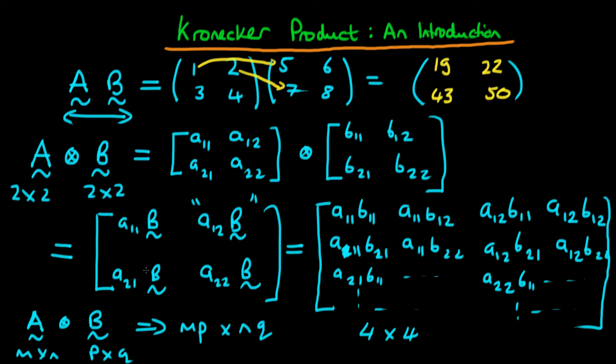It's quite easy to see that because essentially what we're doing is taking each component of A and multiplying it by the entire matrix B, so it's unsurprising that the corresponding rows multiply and the corresponding columns multiply as well.